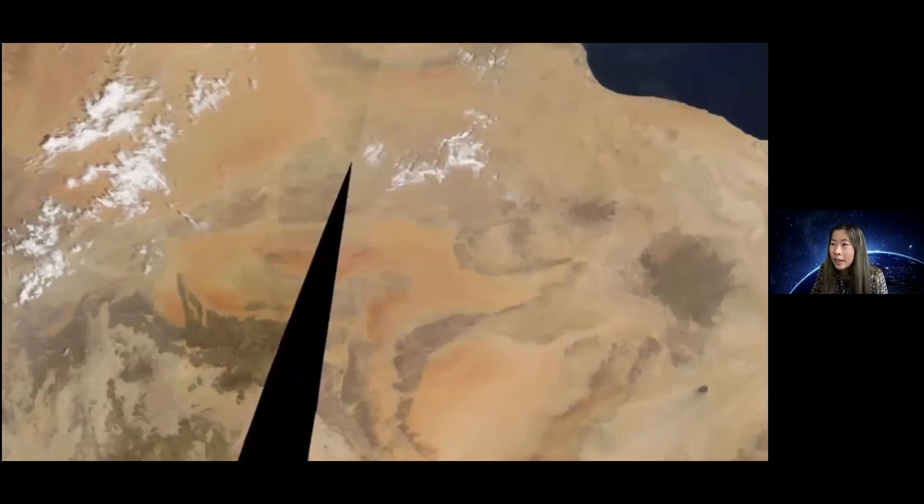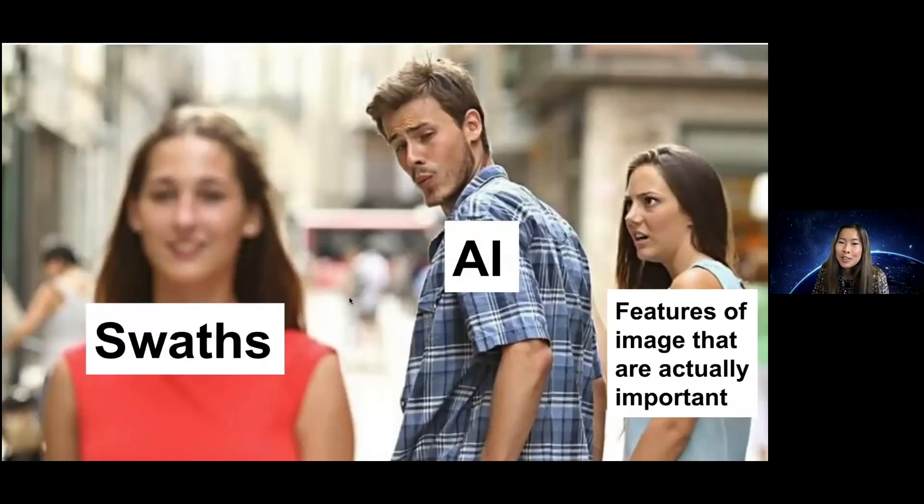However, when computer algorithms look at an empty swath image, AI models think that these empty swaths are the most interesting part of the picture. I mean, imagine these models thinking the most interesting part of this picture is the swath. Essentially, algorithms focus too much on these null areas and don't pay enough attention to the features of the background. So let's see an example of this.